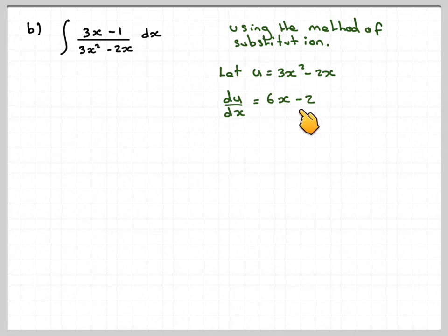Now there is a common factor here of 2. Let's take it out. So we get 2 times 3x minus 1. That's good, because I've got 3x minus 1 there. So dx will be du over 2 times 3x minus 1.